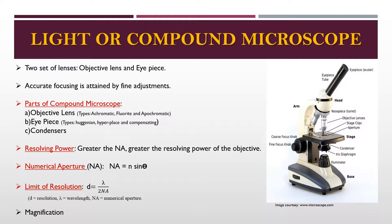Objective lenses gather light rays coming from any point on the object and unite the light at a point to further magnify the image. There are three types of objective lenses: achromatic, which is the simplest and adequate for most purposes; fluorites, in which aberrations are largely eliminated; and apochromatic, which is corrected with respect to aberrations. Aberration refers to the failure of rays to converge at one focus due to a defect in a lens or mirror.